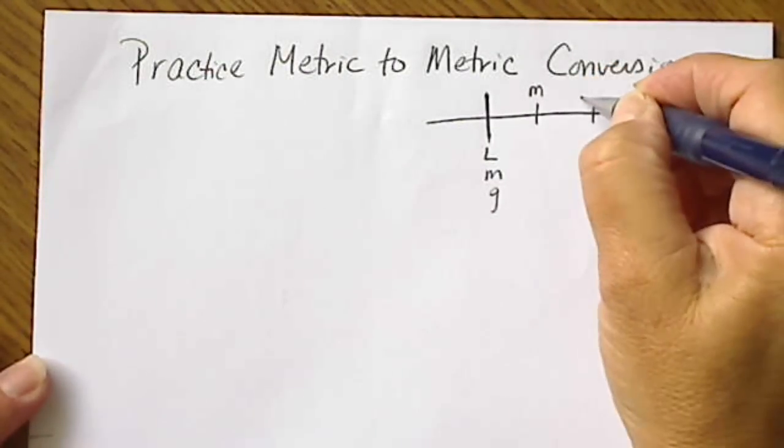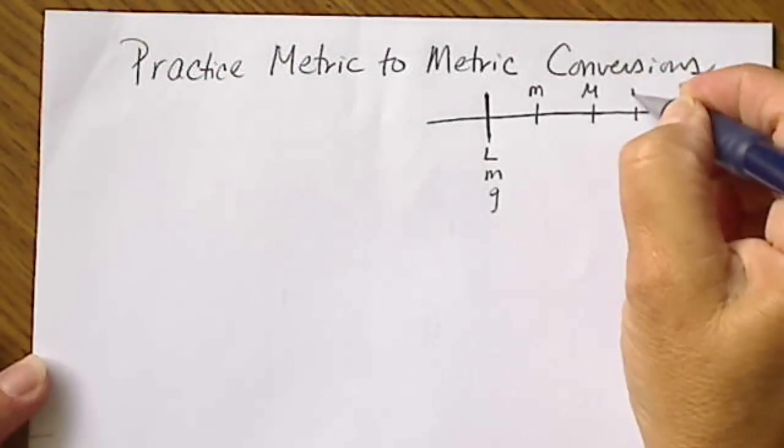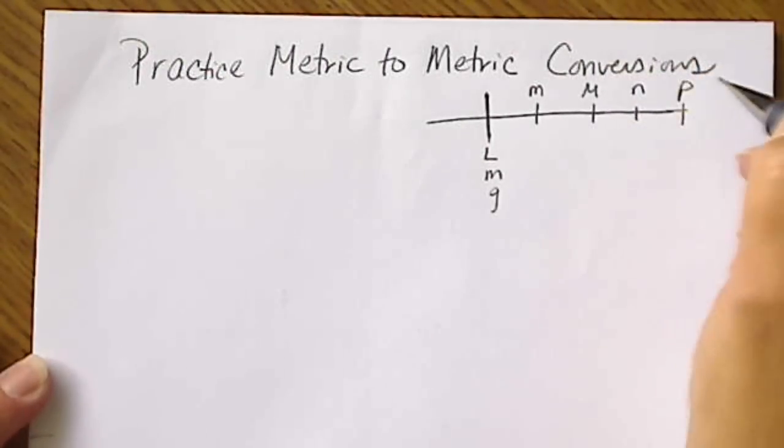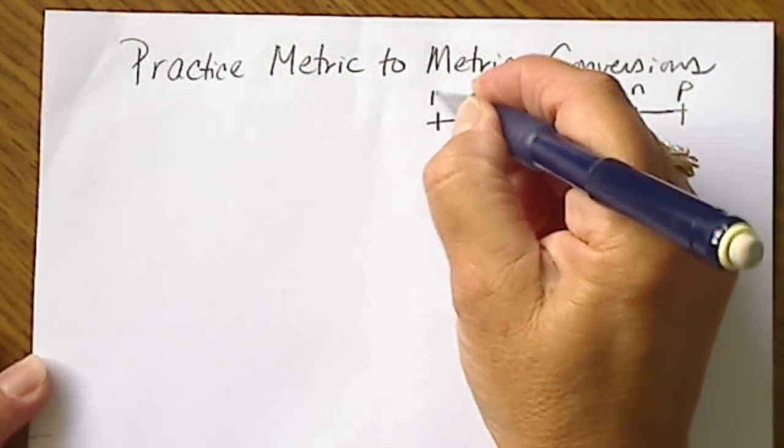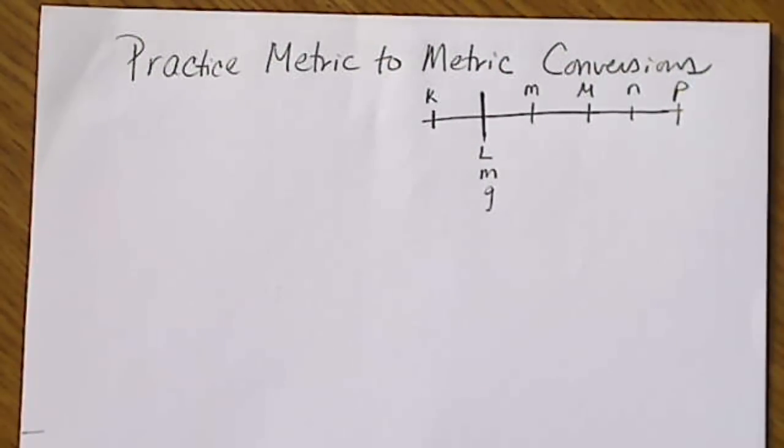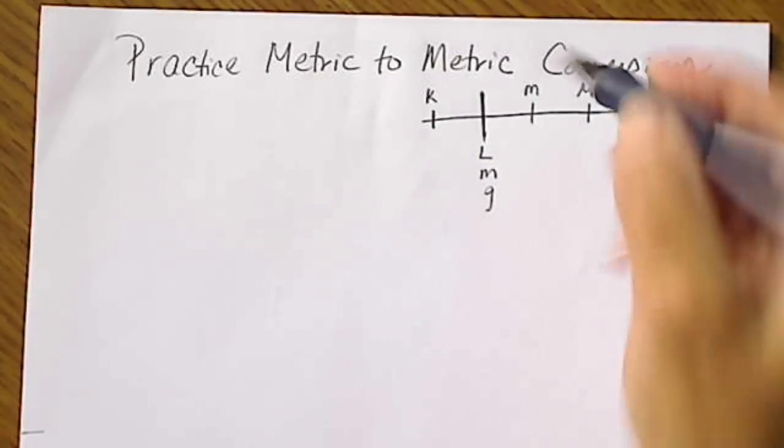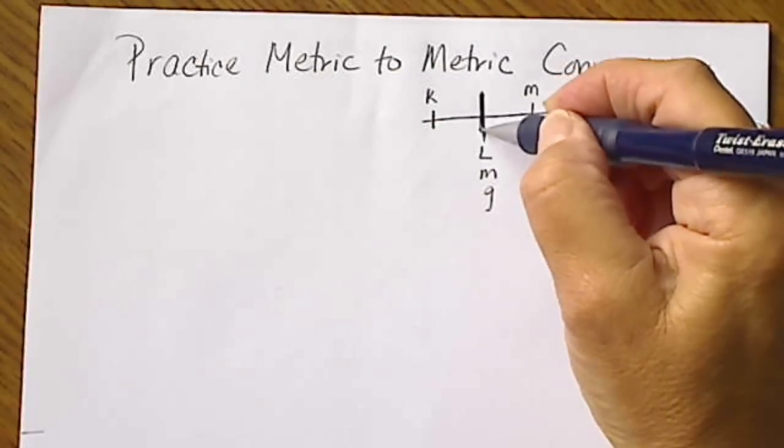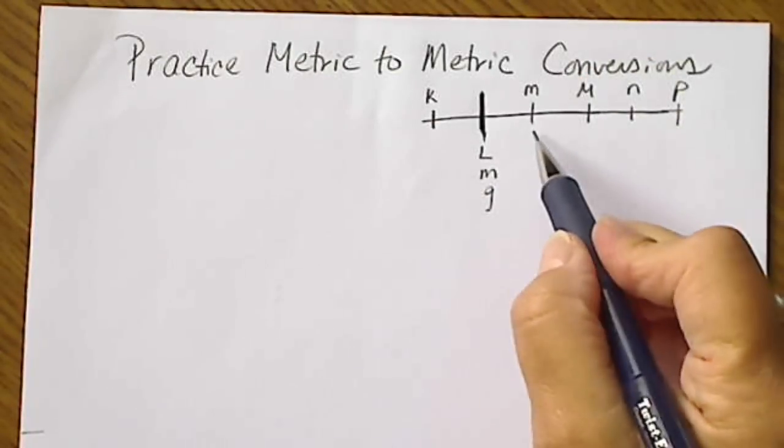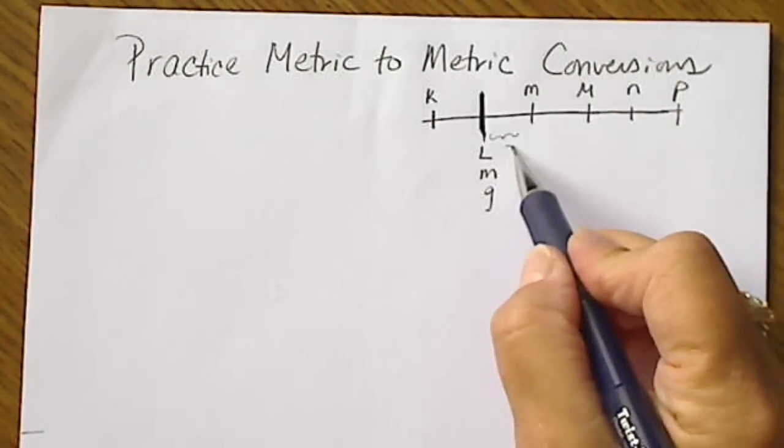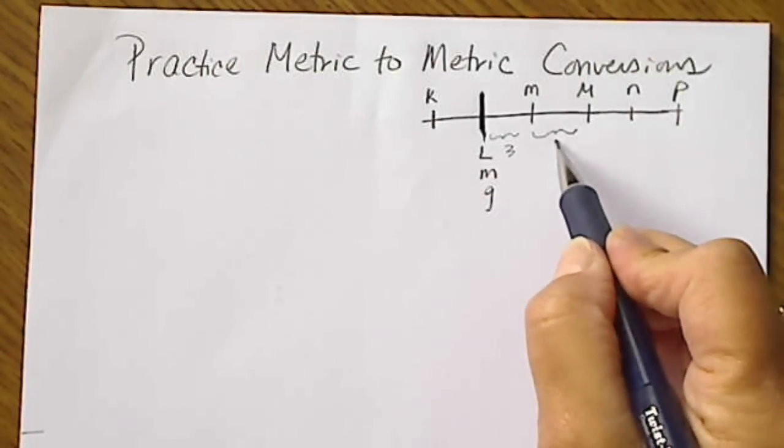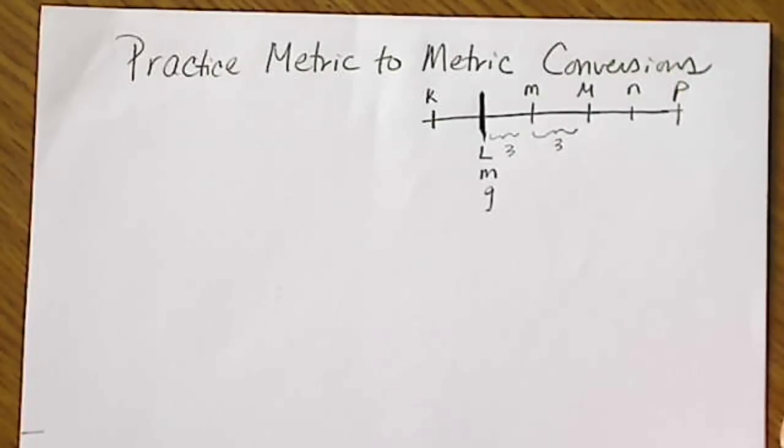So milli is m, micro is a funny-looking m, nano, pico, and kilo is on the other side. So if we remember milli, micro, nano, pico, kilo on this side, and also remember that the word without a prefix is right here. And then there are three decimal places in between each one of these prefixes.